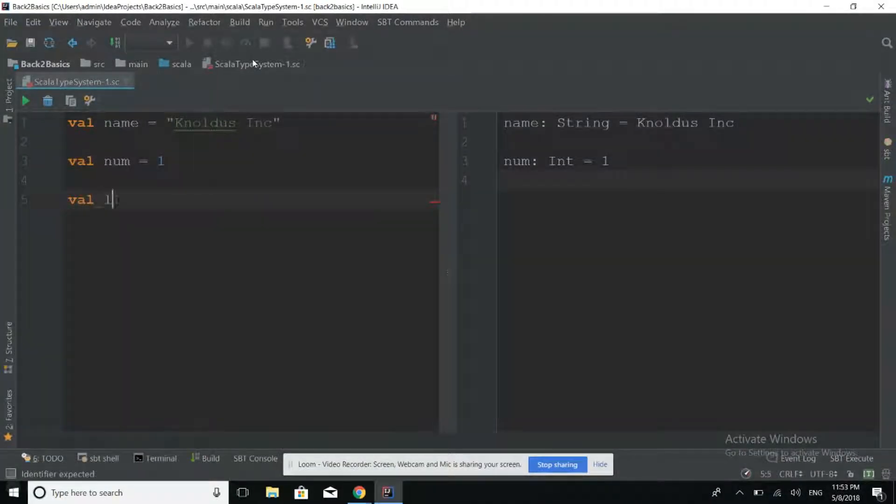Let us try to declare a list. See, the compiler again here is able to determine that it is a list of int from the values that has been assigned to it. This is what is meant by Type Inference.